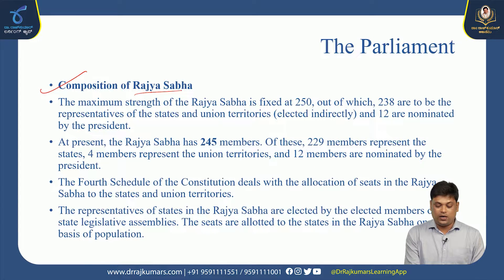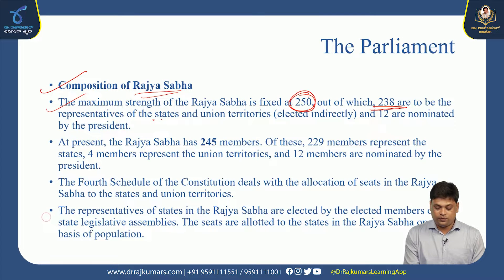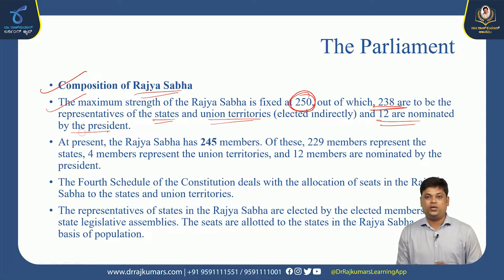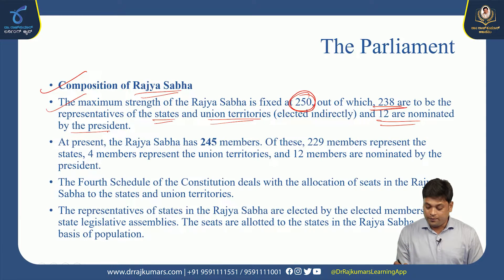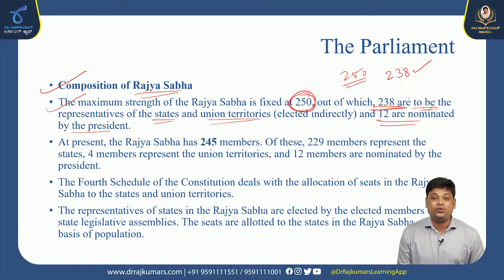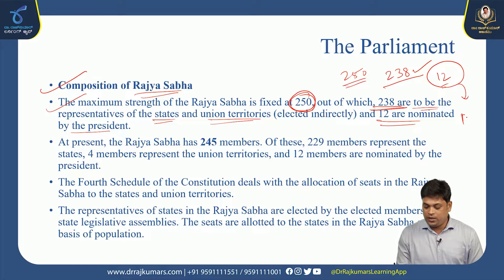Regarding the composition of Rajya Sabha: the maximum strength is fixed at 250, out of which 238 are to be representatives of states and union territories. The remaining 12 are nominated by the President from different fields such as art, literature, music, and sports. For example, Sachin Tendulkar was once an MP of Rajya Sabha.